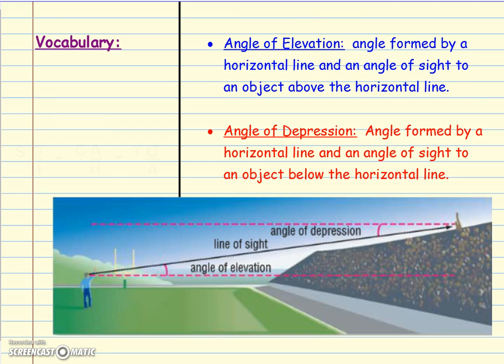A few vocabulary terms to start. The angle of elevation is an angle formed by a horizontal line and an angle of sight to an object above that line.